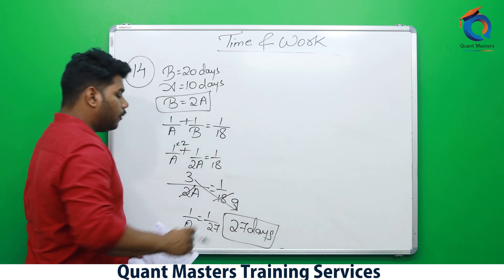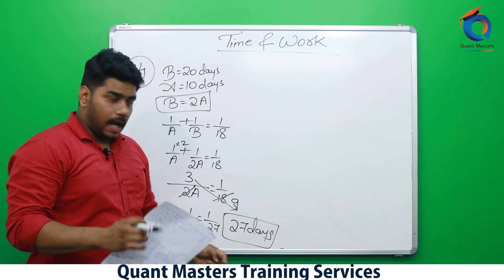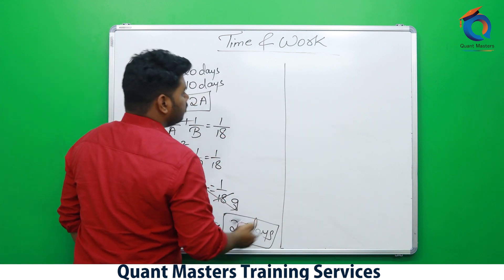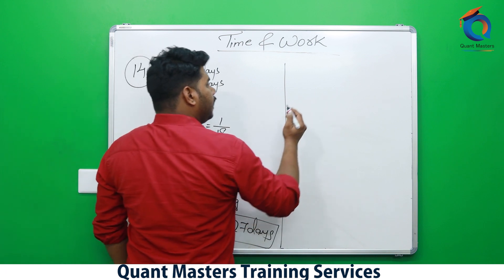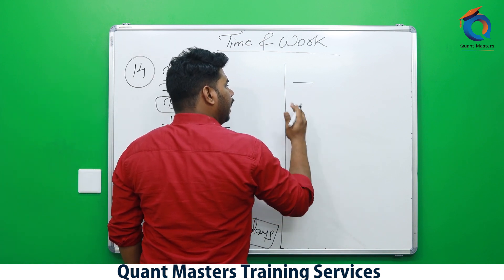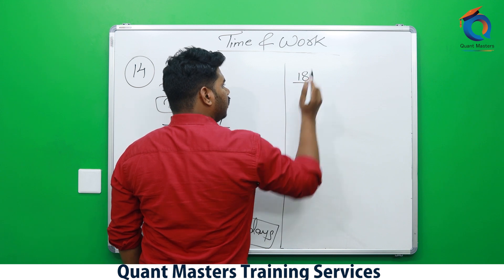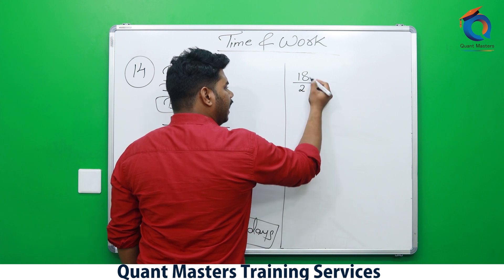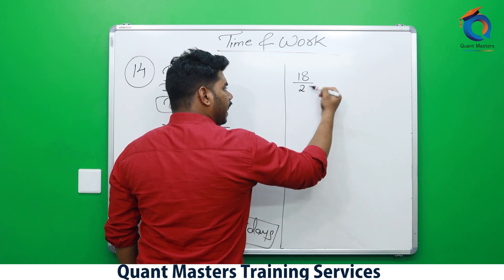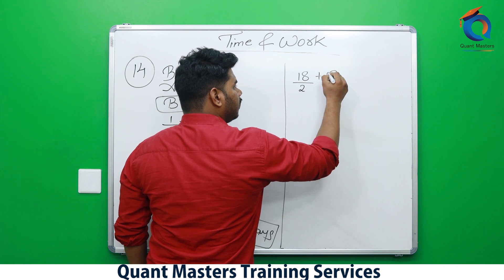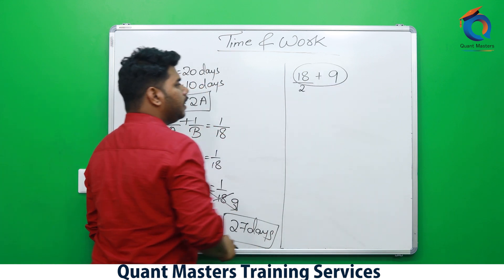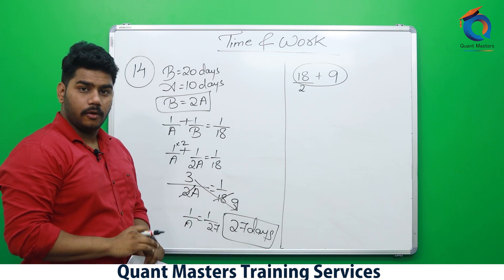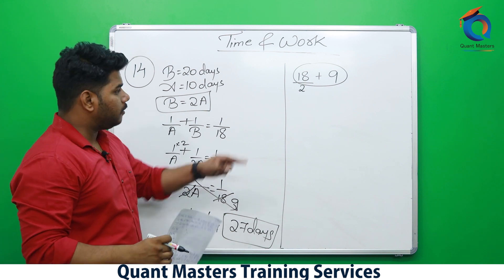That's the textbook method — not the fastest. Here's the fastest method: A is twice as good as B, so divide 18 by 2 to get 9. Answer is 18 + 9 = 27 days. But note — you've understood the technique, not yet the concept.